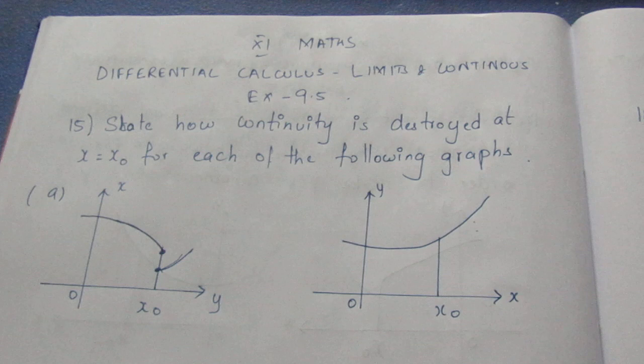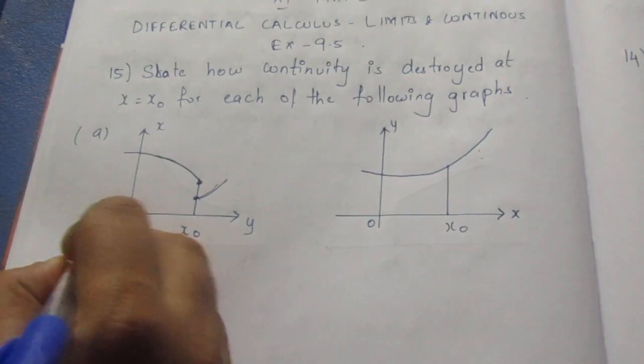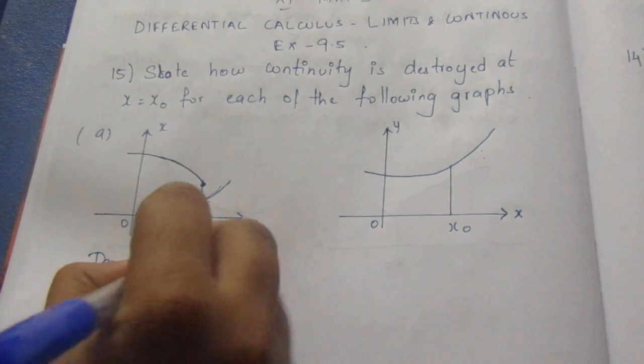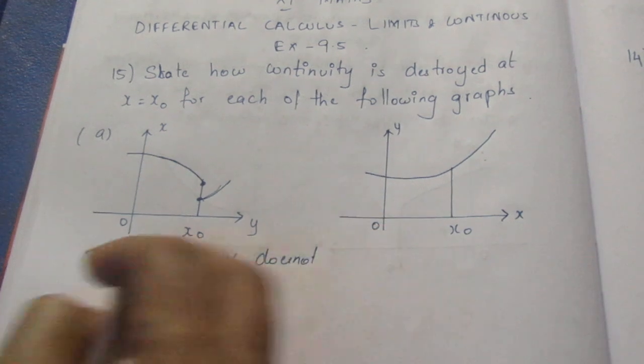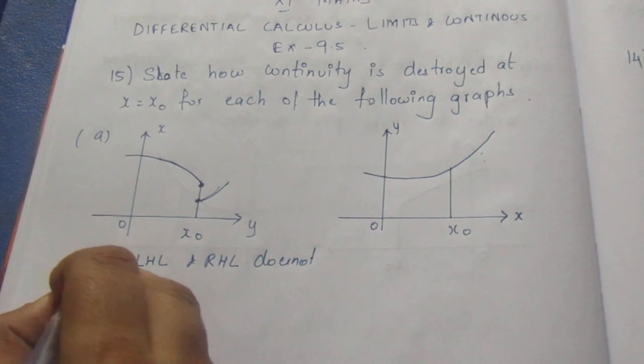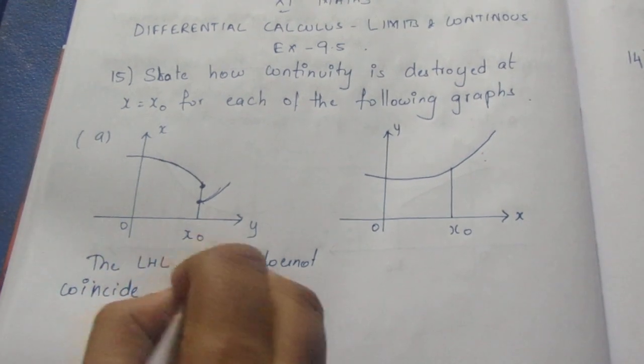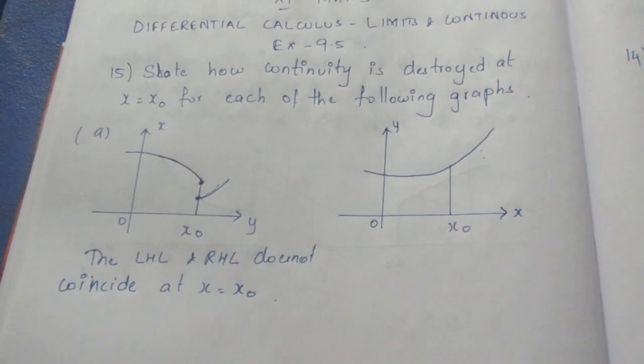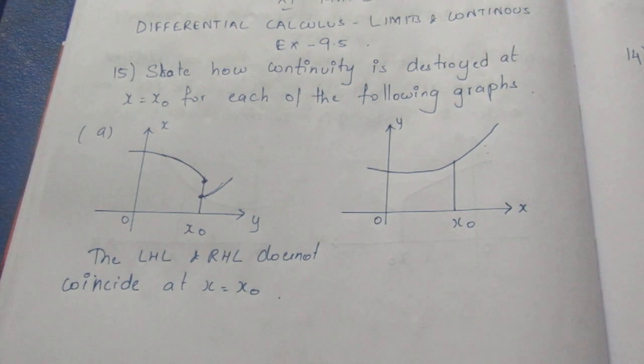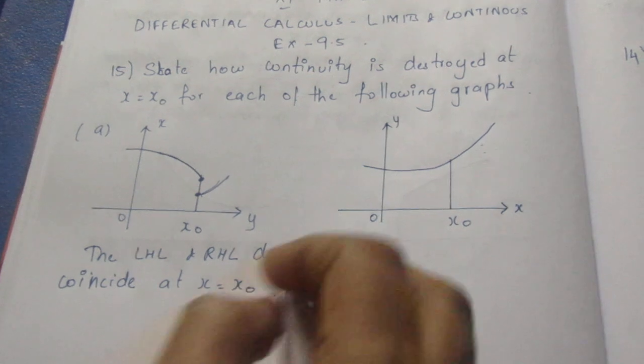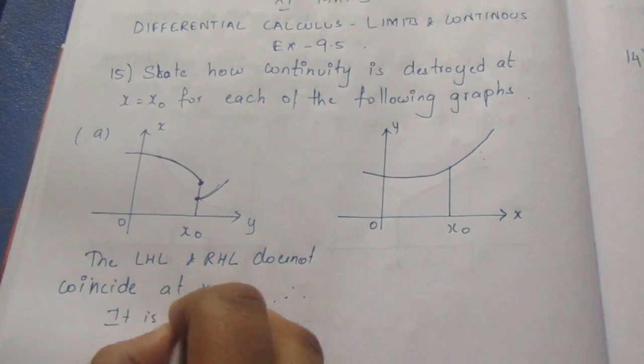In this case, it will not be continuous. So how do you see? The left hand limit, the LHL and RHL, right hand limit does not coincide at x equals x0. That's why it's discontinuous. Therefore, it is discontinuous.